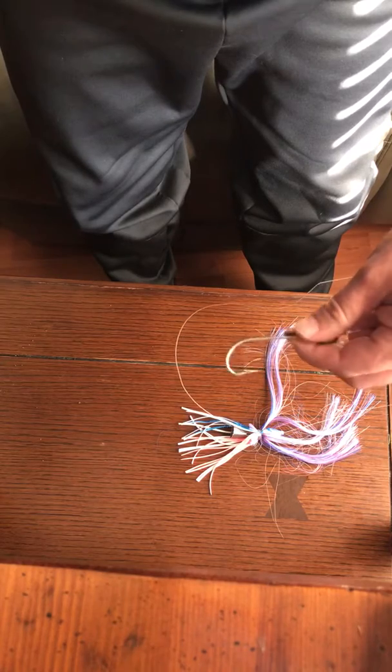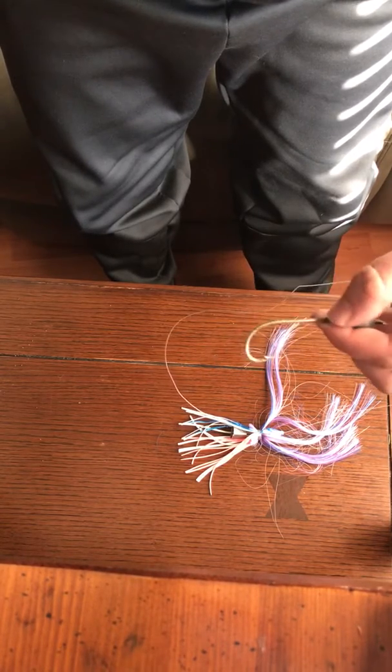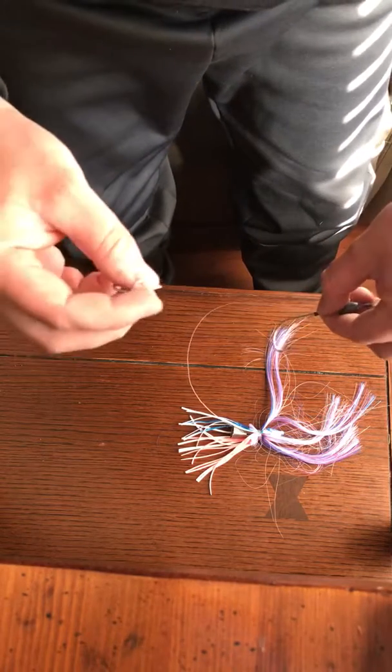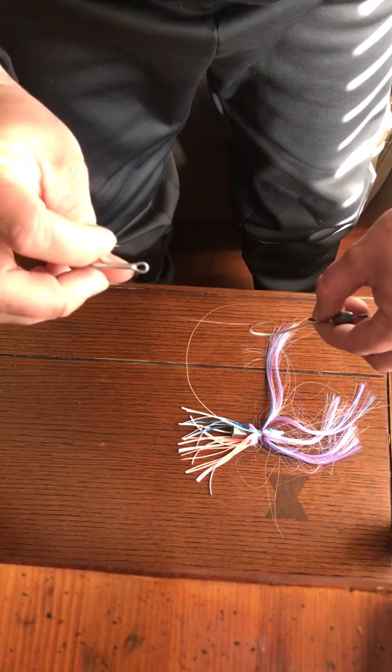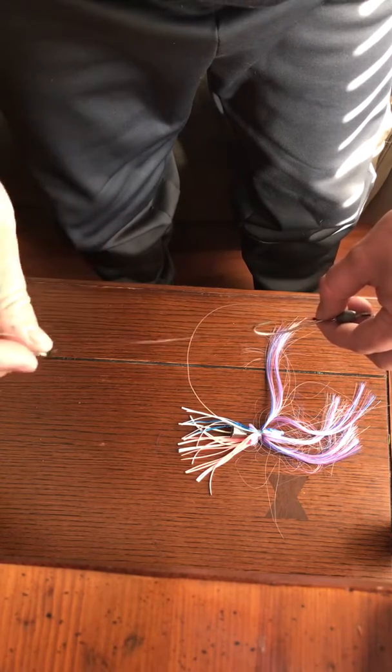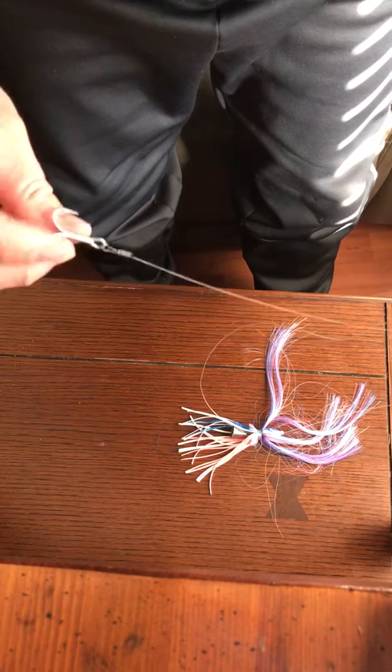If you want a perfect little Ballyhoo rig set up, this is it. And I catch everything. If it's a Spanish, if it's a king, mahi, I've even caught cobia on this. I've caught big mahi on this too and big kings on the stinger hook. You'll be amazed. The fish aren't scared of it. Just give it a shot.